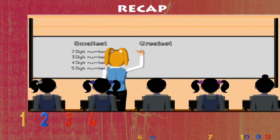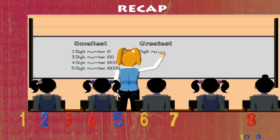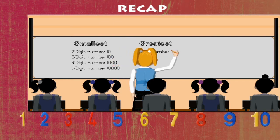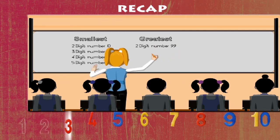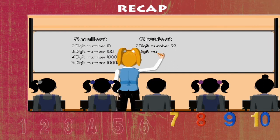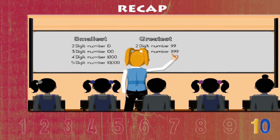Now the greatest two digit number. Who will answer? Yes, it's ninety-nine. The three digit now? It's nine hundred ninety-nine.